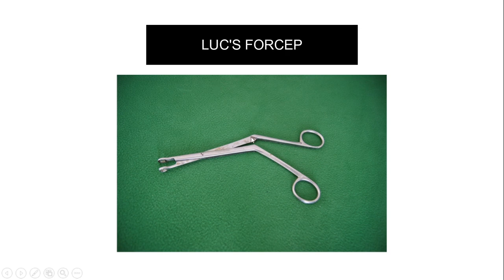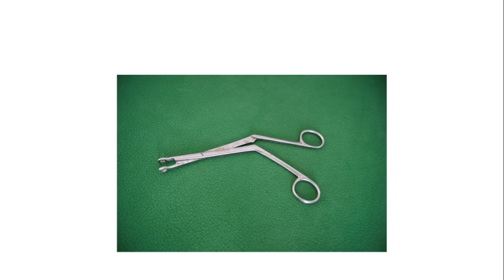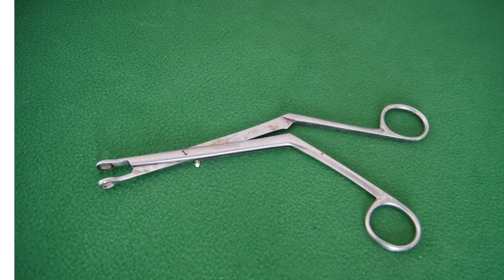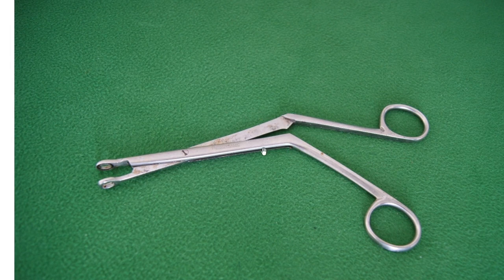This is the Luc's forceps, which should be differentiated from the tonsil-holding forceps and the Blakesley forceps. The tonsil-holding forceps has a blunt end, but the Luc's forceps has a sharp end because it is used for biopsy — to cut tissue. The most important difference is that when you close the Luc's forceps, this end goes inside — there is a slit — so tissue enters inside. With tonsil-holding forceps, the parts come together but tissue does not enter inside in the same way.